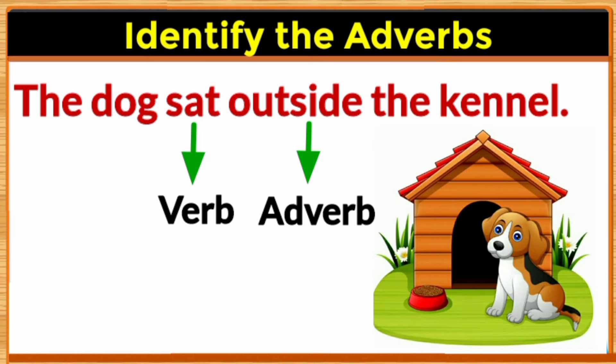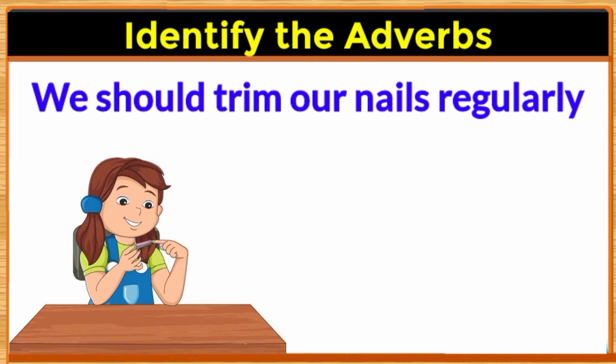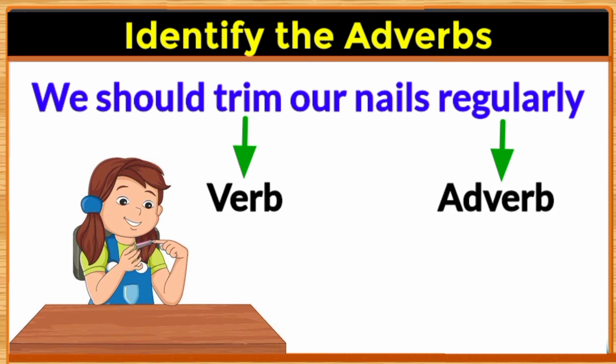So outside is the adverb. We should trim our nails regularly. In this sentence, the action is trim — it is a verb. The word regularly shows us how often we should trim our nails; it tells us more about the verb. So the word regularly here is the adverb.